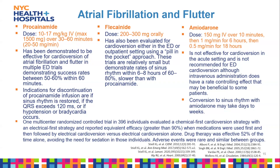Amiodarone, which we're most familiar with here, is dosed at 150 mg IV over 10 minutes as the loading dose, followed by a continuous infusion of 1 mg/minute over six hours, then 0.5 mg/minute for 18 hours. It is not the best option for acute cardioversion in the ED because it can take days to weeks to convert to normal sinus rhythm, so it's not ideal for these patients.